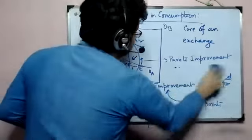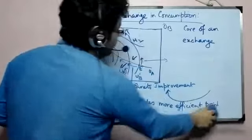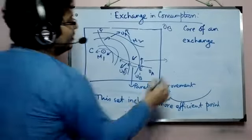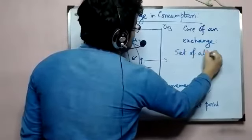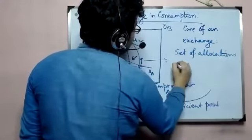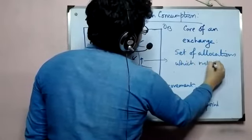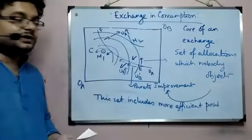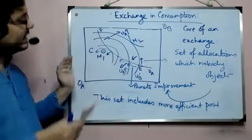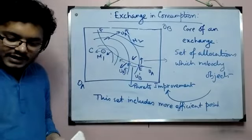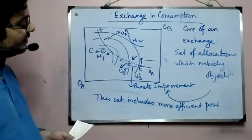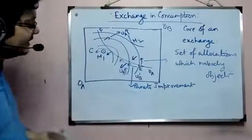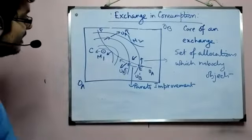This region is called the core. So this region is called the core. The definition of core is: the core is the set of allocations which nobody objects. The region between M1, M2, E, and F — that is our core. While constructing the core, we crossed over the idea of equilibrium or efficient points.